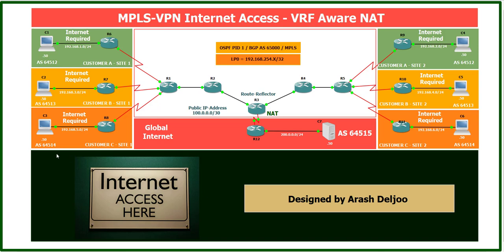Let me show you. Here we have three customers again — this is similar to the previous scenario. Customer A site 1, Customer A site 2, B site 1, B site 2, and C site 1, C site 2. As you can see, all of these customers need to access the internet. All of these sites require internet, so we need to configure internet service for these customers.